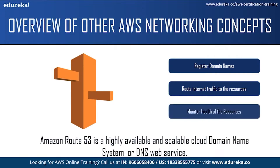The third function is it checks the health of your resources. Route 53 sends automated requests over the internet to a resource such as a web server to verify if it is reachable, available, and functional. You can also choose to receive notifications when a resource becomes unavailable and choose to route internet traffic away from unhealthy resources.